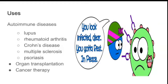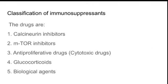Organ transplantation is a main area where rejection happens, so to reduce the rejection reaction we give immunosuppressants. In cancer therapy, immunosuppressants are used as chemotherapeutic agents. We need to depress the immune response as a mode of treatment. To kill the cancer cells, we need to reduce the immune response in our body, so we give immunosuppressant drugs.